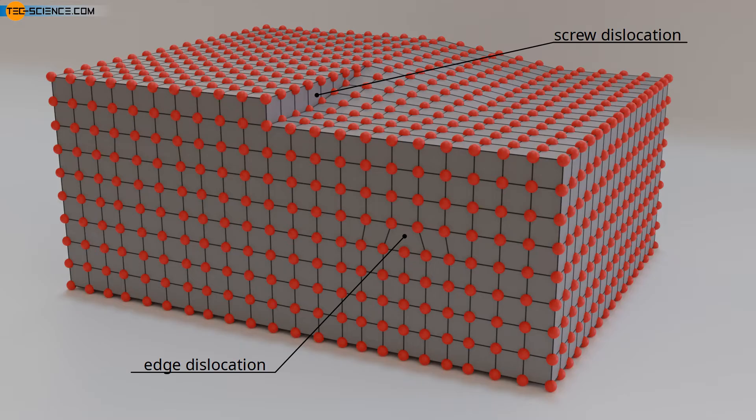The dislocation density in a crystal is given as the total length of all dislocation lines per unit volume. There are dislocation lines with a total length of about 1 km per cubic millimeter of a soft annealed metal. Cold working increases the dislocation length per cubic millimeter to about 1 million kilometers. From a dislocation density of about 100 million kilometers per cubic millimeter, the material is so severely damaged that it is basically destroyed.